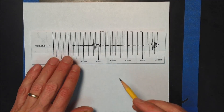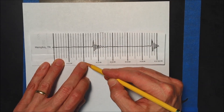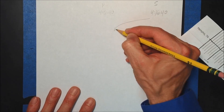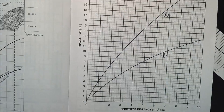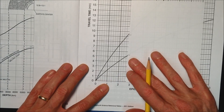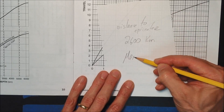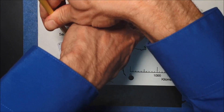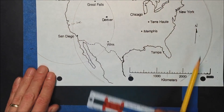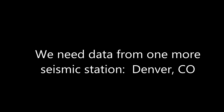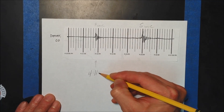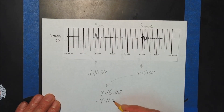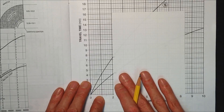Next up: Memphis, Tennessee. The P wave will arrive at 4:12:30.